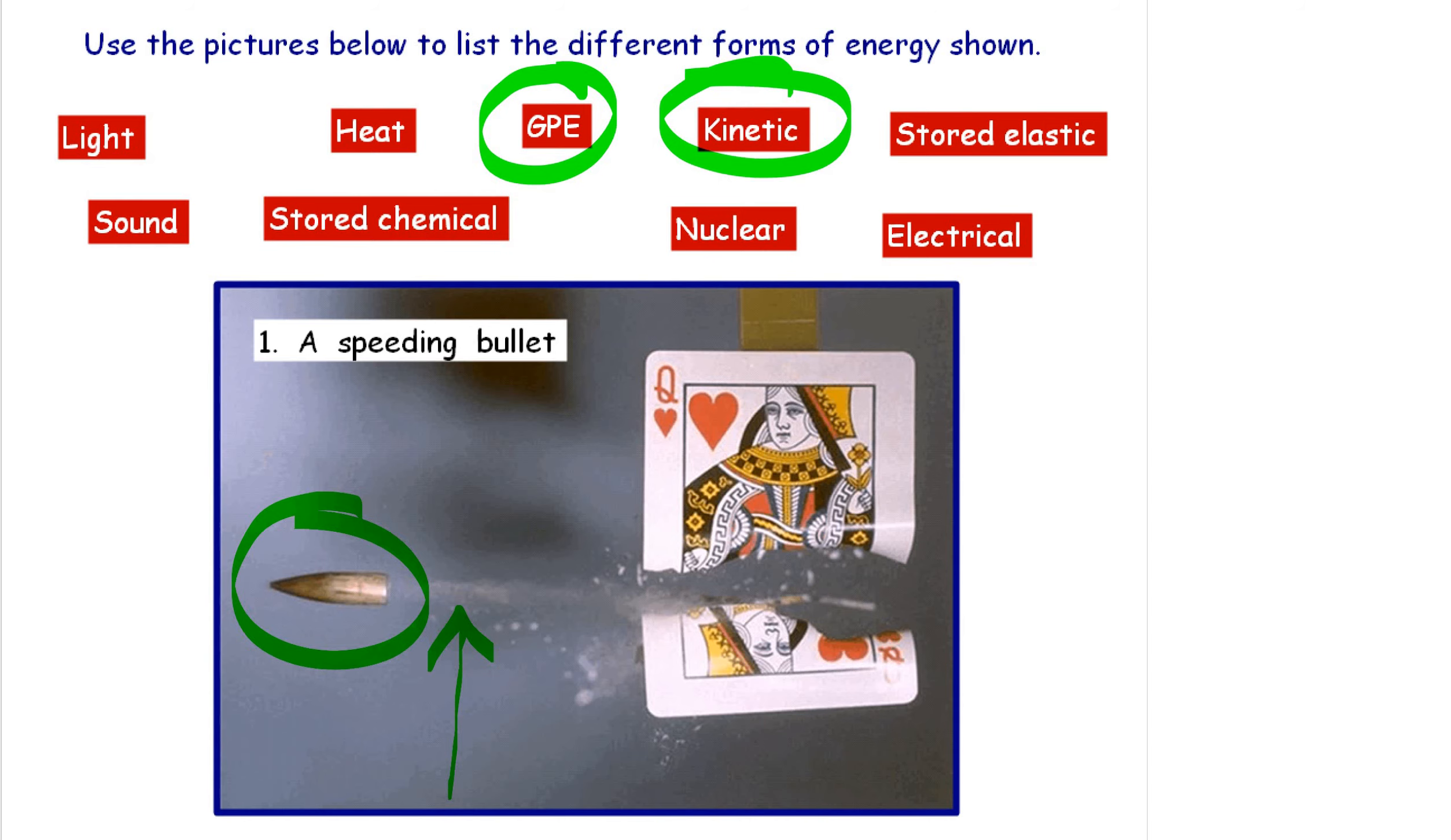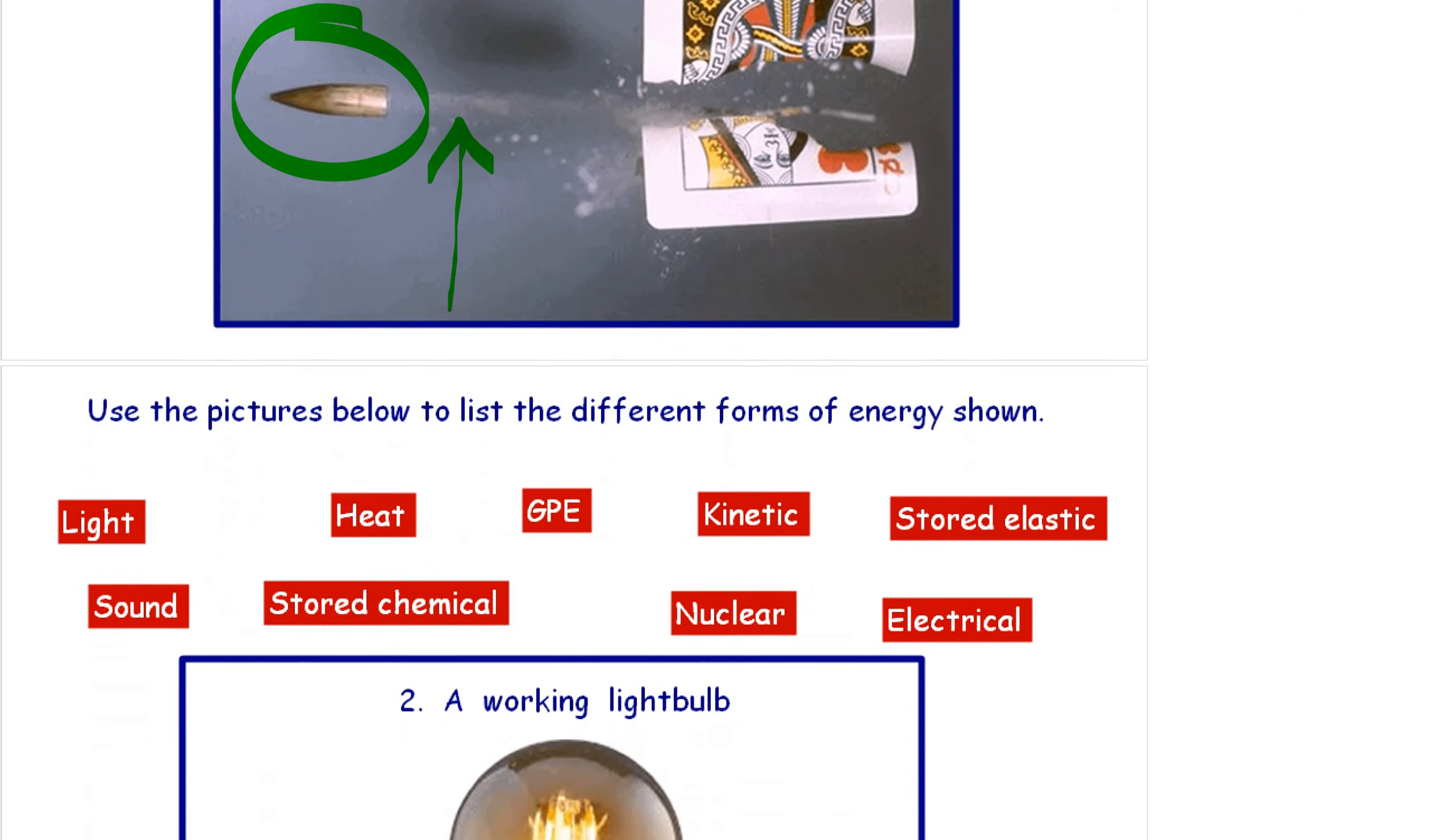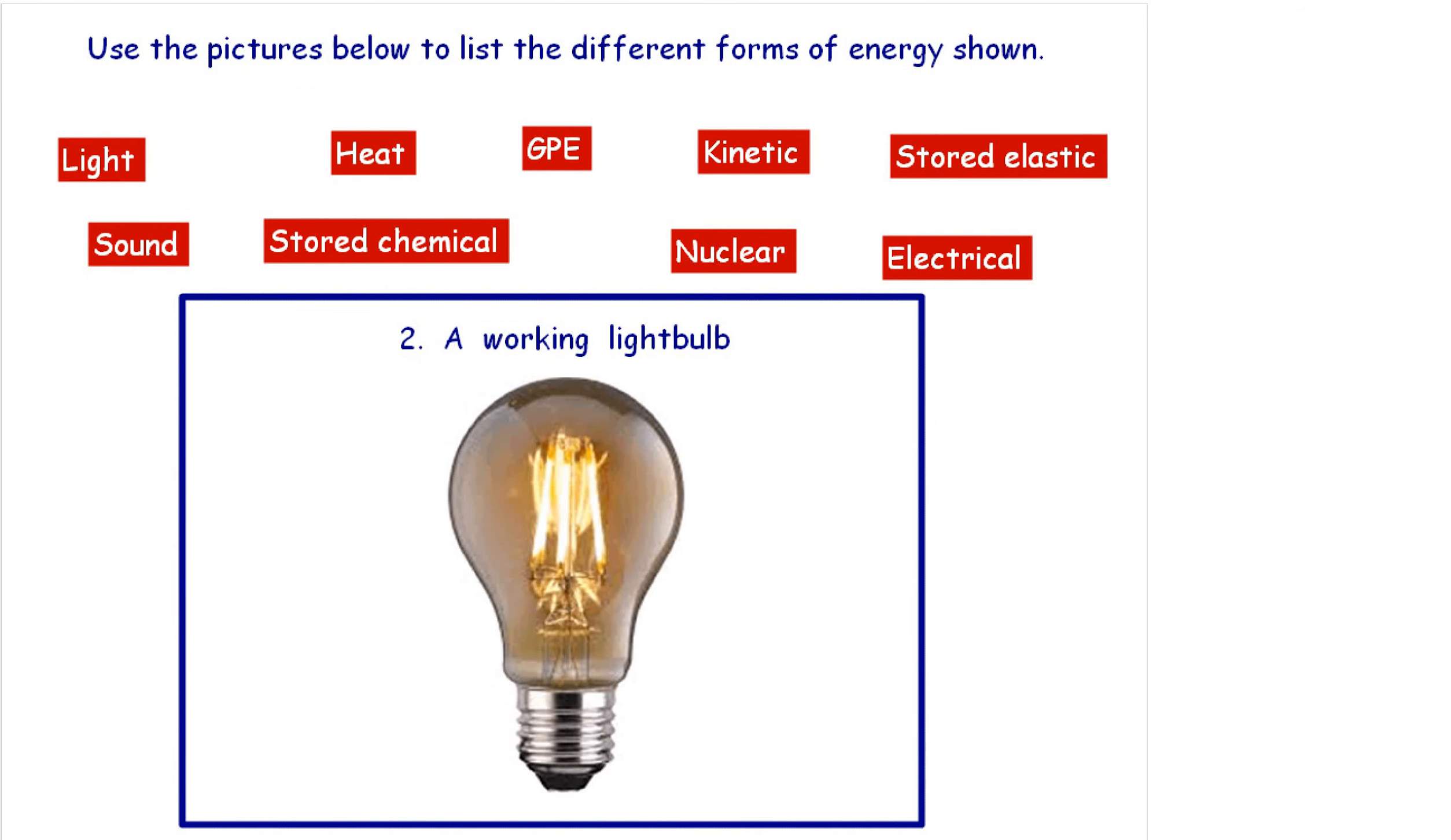Let's move on to the next one, a working light bulb. Now as long as you can justify what you have highlighted then there's no problem with this. The working light bulb obviously needs electrical energy to work. It provides light and a small amount of wasted heat. You may have heard light bulbs making a small noise before, so you could in theory write down sound. And light bulbs tend to be in the ceiling so they are held above the ground, so you could include GPE as well. But the three main ones that we need to worry about here is light, heat, and electrical.